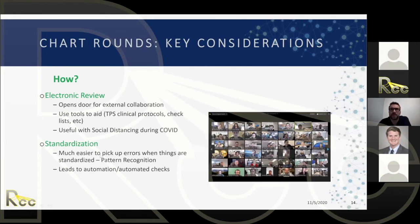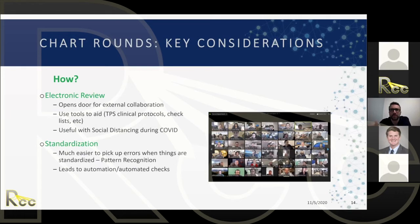Try to be as standardized as possible. It's much easier to pick up errors if every plan looks the same — same names for structures, same colors for contours, same colors for isodose lines. We are very good at detecting patterns, so if you keep things standardized errors become much easier to find. For example, if a physicist changes the color of the 100% isodose line to one usually reserved for 110%, you'll immediately see a reaction from physicians.